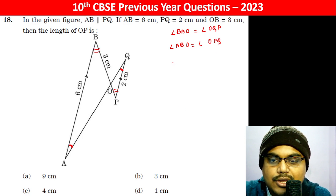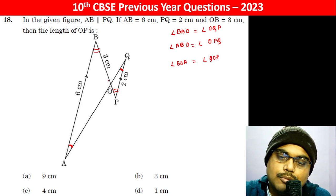Again, alternate interior angle and angle BOA will be equal to angle QOP which is vertically opposite angle.